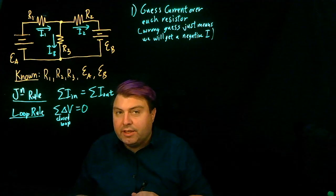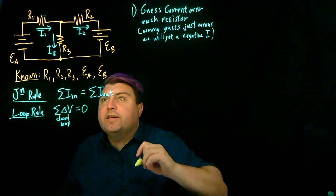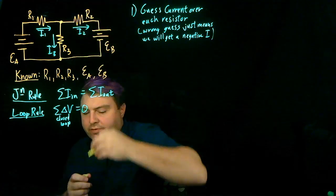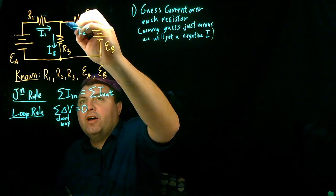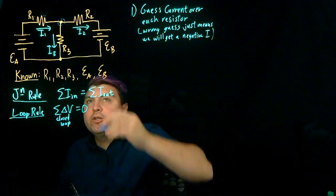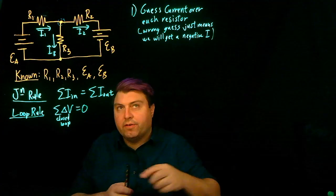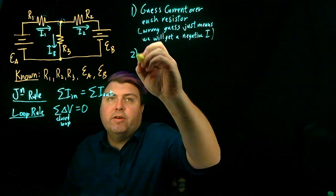What this gives us is that at this junction right here, now we know a lot about this junction because we know which currents are going in, which currents are going out. So now we can write and generate a junction rule based on our guesses.